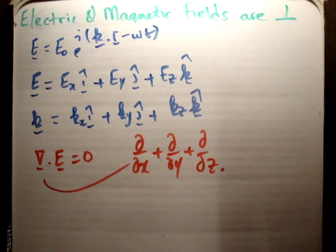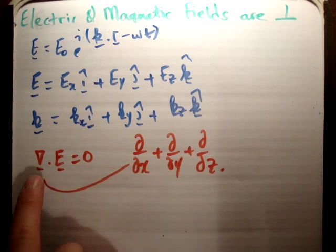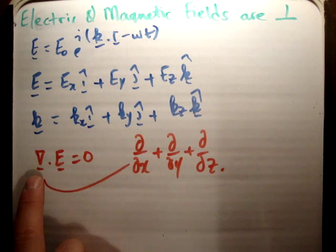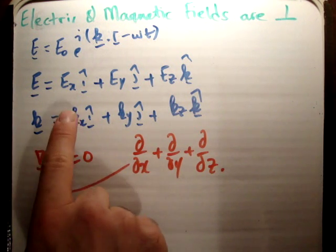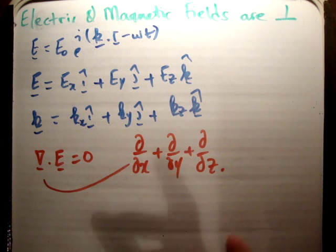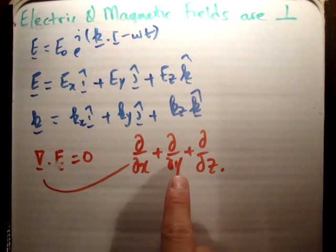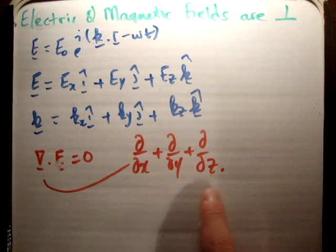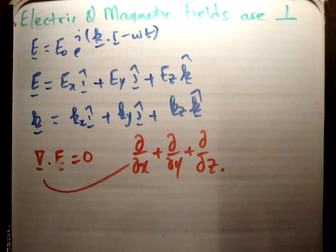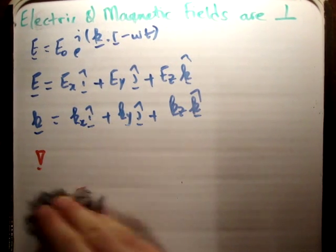You multiply the components in each of the unit vector directions with each other. So you multiply ∂/∂x times the electric field, add to it ∂/∂y times the electric field, and add to it ∂/∂z of the electric field. You multiply this times each of the components of your electric field, and you get a very simple relation as a result.